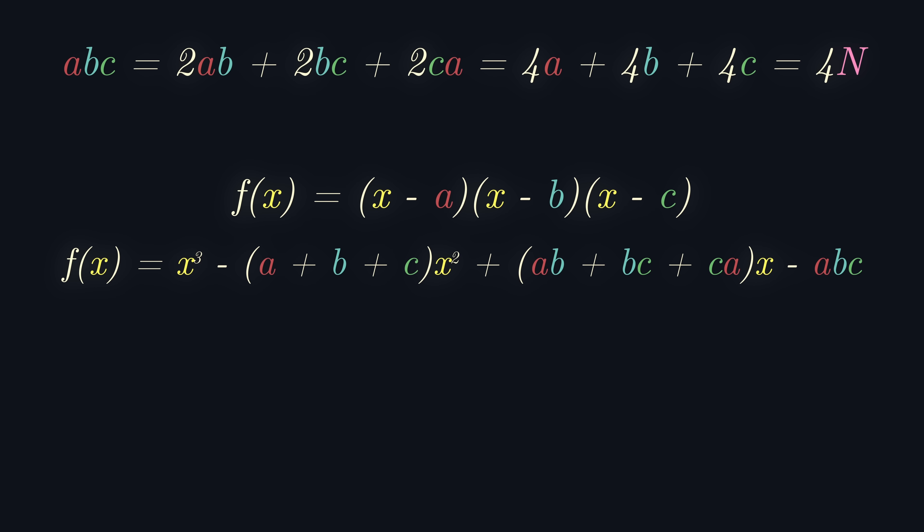And expanding gives us the following expression. Just like magic, these coefficients seem to align perfectly with the expressions for the volume, the surface area, and the perimeter. So, f of x equals x cubed minus nx squared plus 2nx minus 4n. And again, we have f of x in terms of some single parameter n.